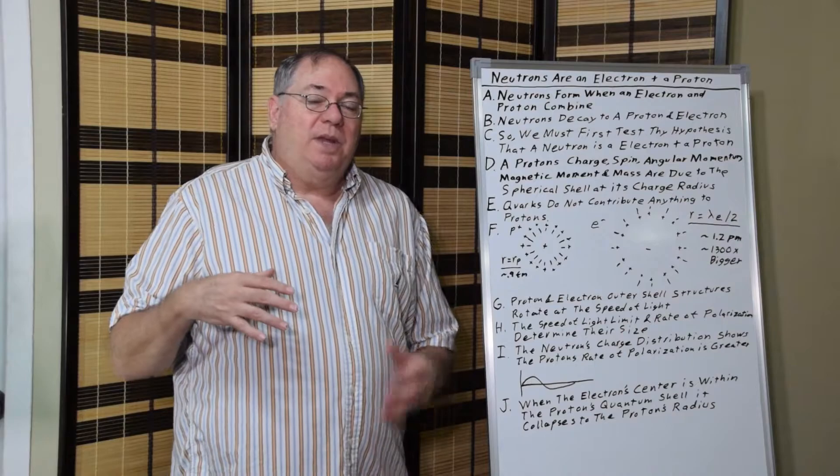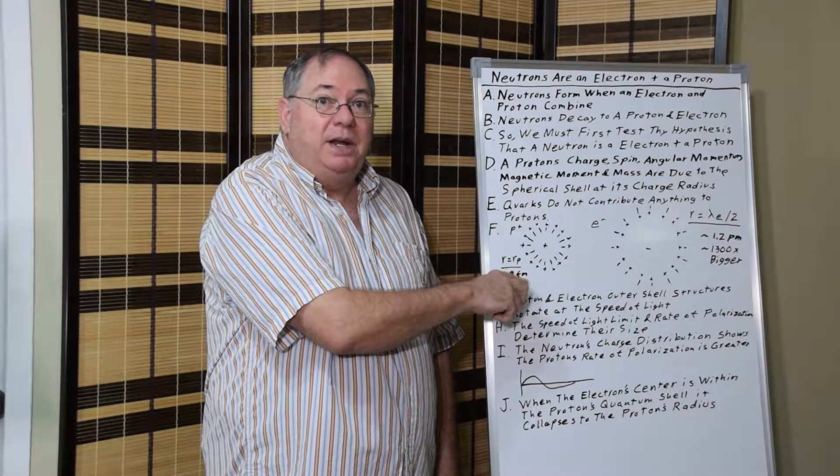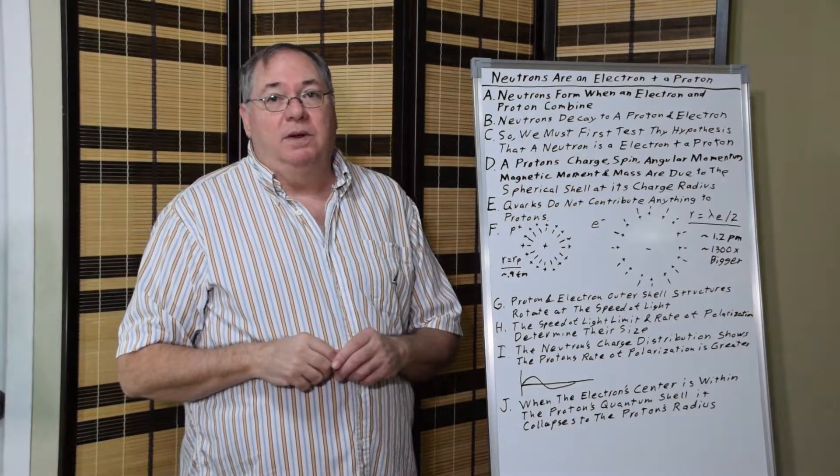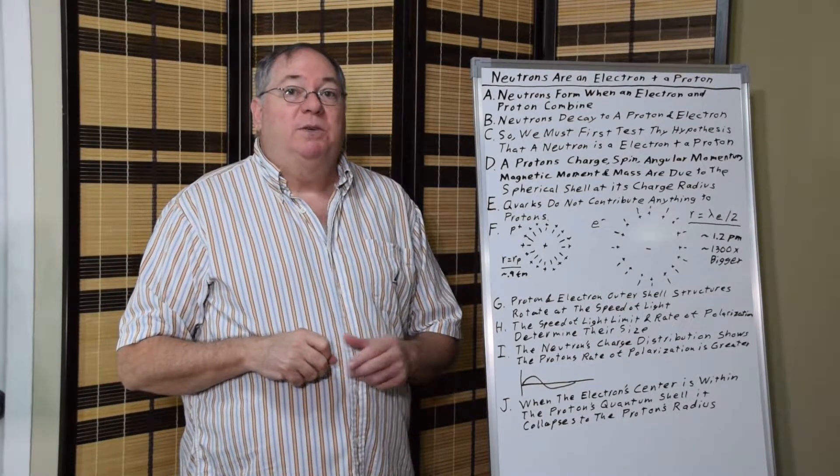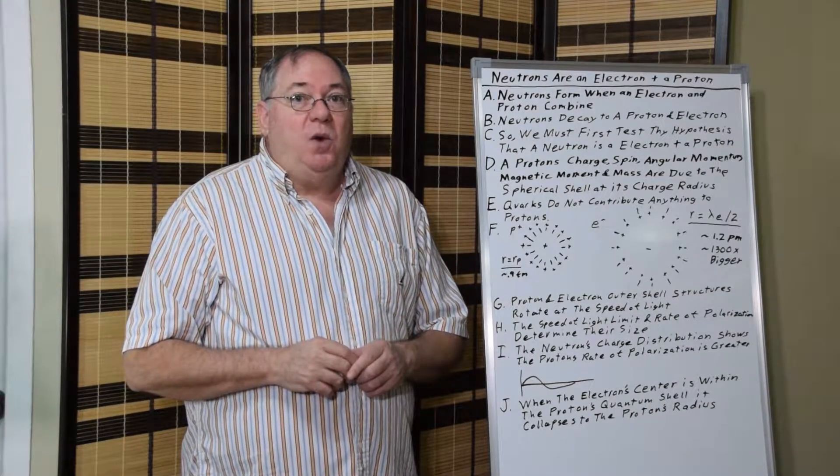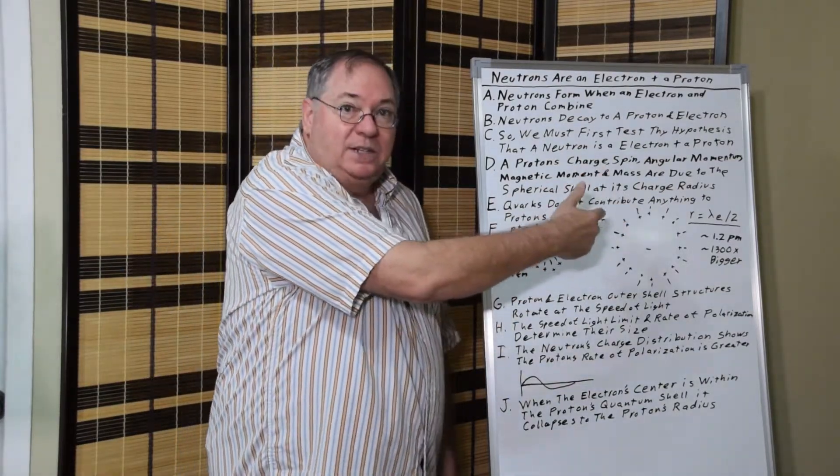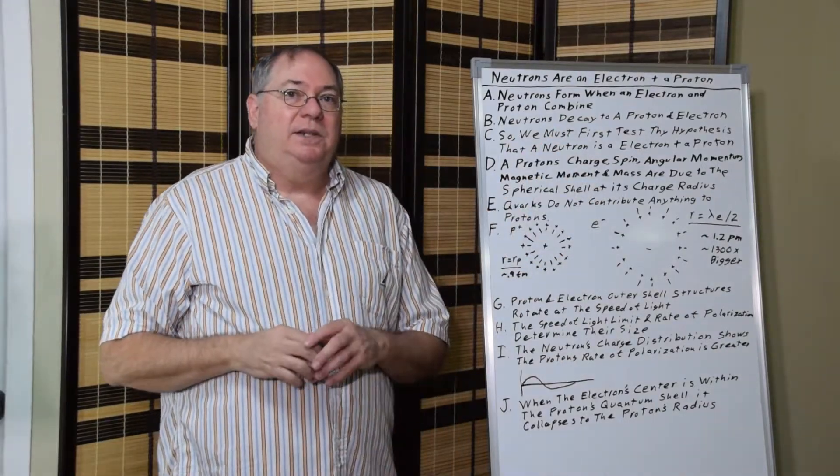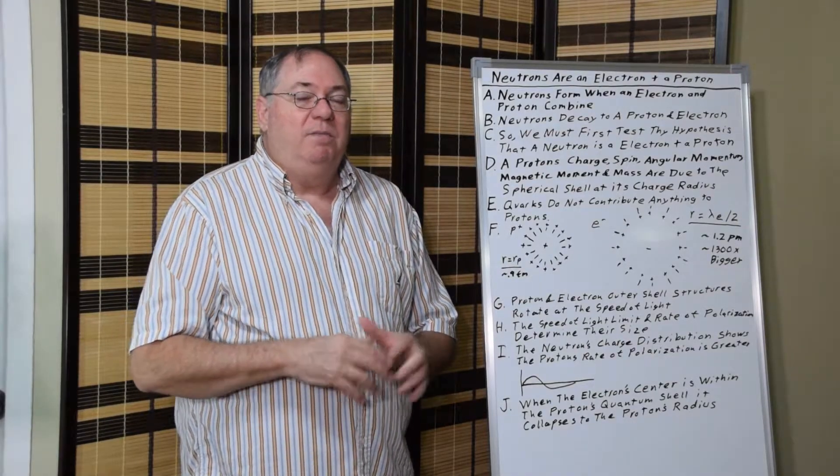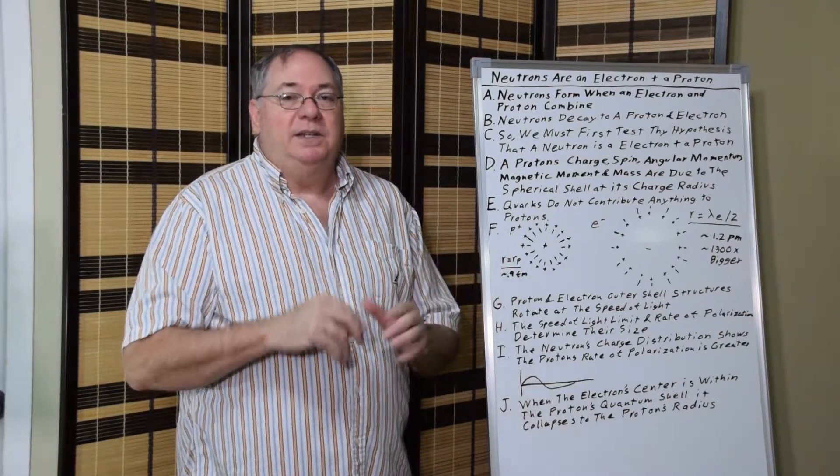And the electron's the same way, but with the electron, instead of a radius at about 0.9 times 10 to the minus 15 meters, or 0.9 femtometers, you have a radius that's half the Compton wavelength of the electron. So it's about 1.2 times 10 to the minus 12 meters, or picometers. So it's 1,300 times larger. And it's also rotating at the speed of light at that radius.